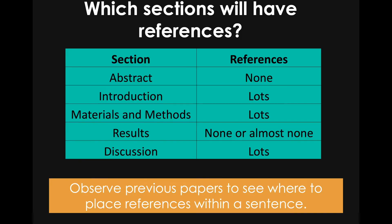Where are you going to be putting references in your paper? This table shows you where they're going to go. In the abstract, there are typically no references. The introduction will have a lot of references, and so will materials and methods. Results may have no references or just a few — it won't be very many. And the discussion section will also have a lot of references.